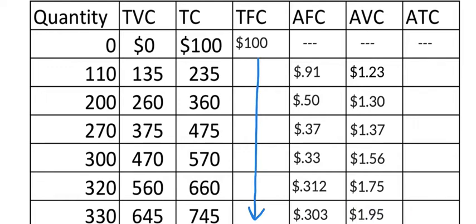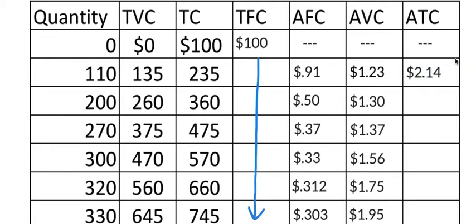We've got one more column to complete, and there are actually two ways of doing it — the hard way and the easy way. The hard way is to take total cost and divide it by Q, but we don't really need to do that. All we need to do is add average fixed cost and average variable cost, and that gets you average total cost. So this is going to be pretty easy: $1.23 adding on $0.91 gives us $2.14. And just to convince you, if I had taken $2.35 and divided it by 110, I get the same answer — $2.136, which rounds to $2.14.